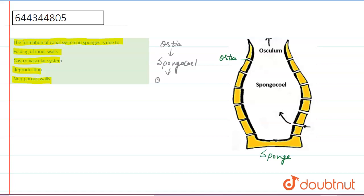from spongocoel it enters in osculum. So we can say that this type of flow is present in sponge. And how does it form? It forms by folding of inner wall. So we can say that first option